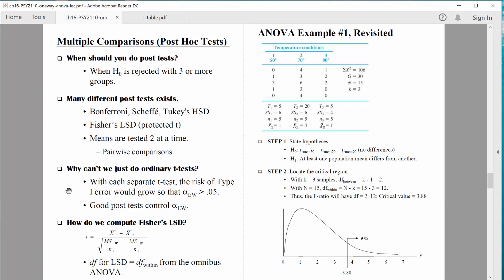So if we're doing pairwise comparisons, if we're simply comparing two groups at a time, why don't we just do normal t-tests? Well, keep in mind, every time we do a test, there's a risk of a type 1 error. And what we want to try to do is keep that alpha level, the risk of a type 1 error, at 0.05, 5%, across the entire experiment. So good post-tests do something to try to control that alpha level to keep it at 5% across all the comparisons that we need to do.